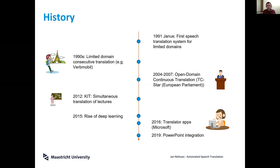Then around 2015 we saw the rise of deep learning, which really boosted all the technology. The performance of all the basic components made a large jump, and we saw significantly better performance, which then led to more and more companies building real products.